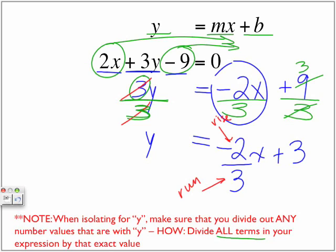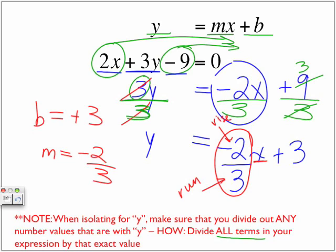So in other words, the slope now of this equation is negative 2 over 3. Remember what we said, that the slope is the value that is in front of x. Notice how we do not include the value of x in our value. And our y-intercept is positive 3.